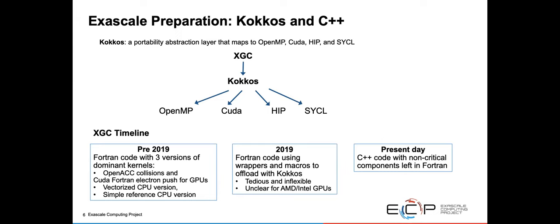We opted to use Kokkos and also convert our Fortran code to C++ to enable this. Kokkos is a portability abstraction layer that maps to these different languages and allows us to not have to worry about that. Before 2019, XGC was a Fortran code with three versions of our dominant kernels: OpenACC, CUDA Fortran, a vectorized CPU version, and a simpler reference version. Briefly, we tried a hybrid code where we used Fortran with wrappers and macros to offload with Kokkos, but that wasn't really tenable in the long term. Currently we've moved to C++ code, although there are some components still in Fortran.